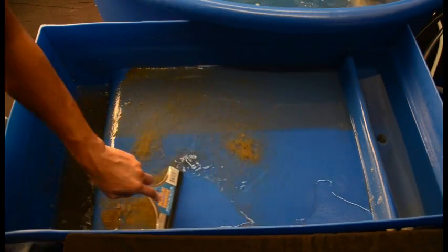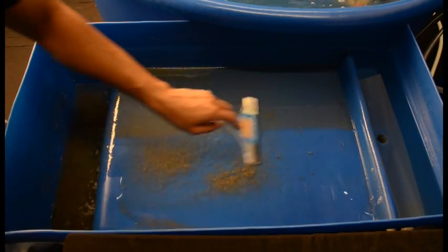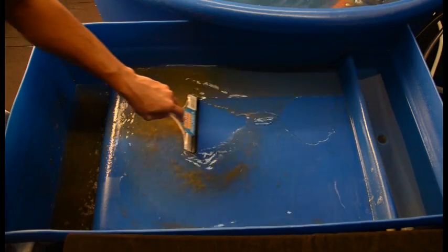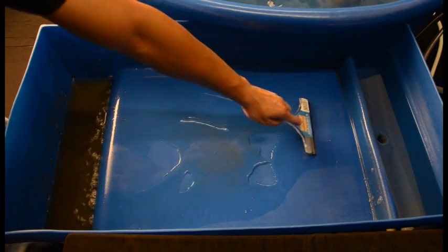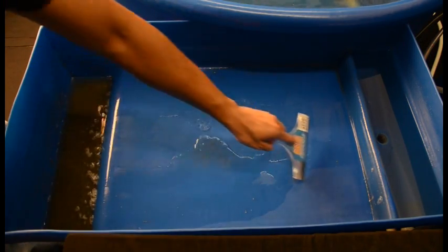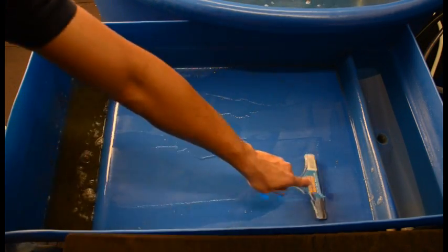Using the provided squeegee, bring all of the solid waste in the clarifier table down toward the drain. Be sure to monitor how full the bucket is getting. The clarifier table holds more than 5 gallons of water, so you will need to empty the bucket midway through the cleaning once the bucket gets full.